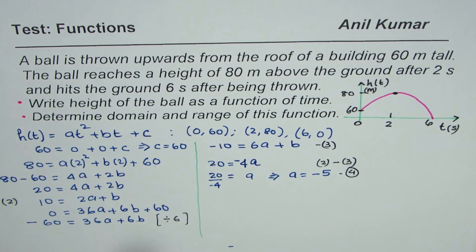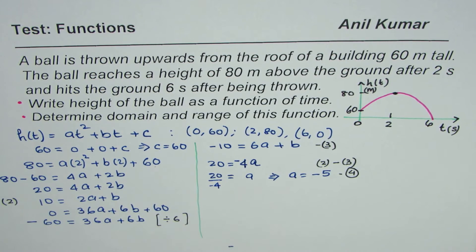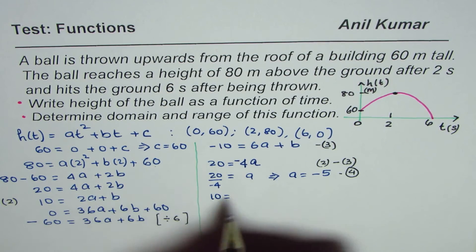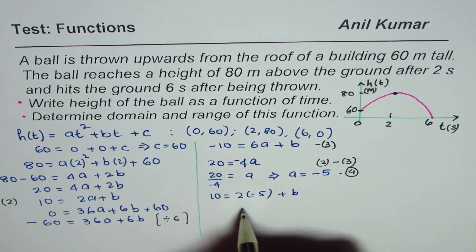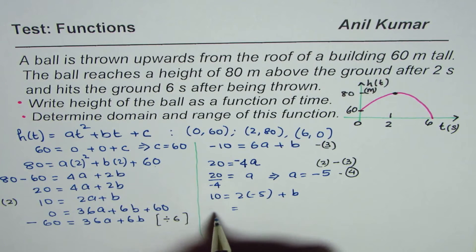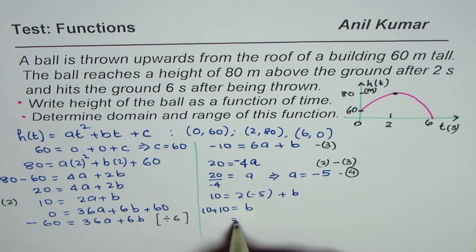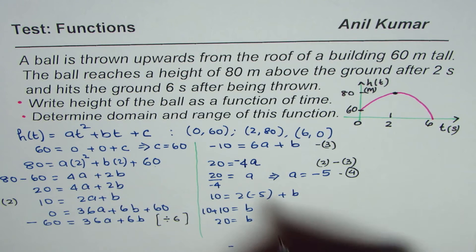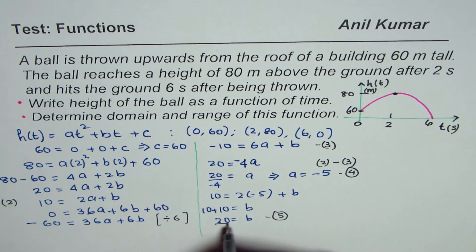Now we know a = −5, so we substitute into equation 2: 10 = 2(−5) + b, which gives 10 = −10 + b, so b = 20. Call this equation 5.